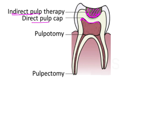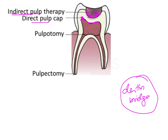In direct pulp capping, sometimes there can be a pinprick exposure that occurs — usually seen when there is deep dentinal caries. Instead of removing the pulp, a medicament is placed over the exposed pulp which causes formation of new dentine over the exposed area, allowing healing to take place. This is by the formation of a dentine bridge. For example, if during caries removal there was a pinprick or small exposure where bleeding could be easily stopped — indicating no pulp inflammation — we can do direct pulp capping: place a medicament, seal it, form a dentine bridge, and maintain pulp vitality.